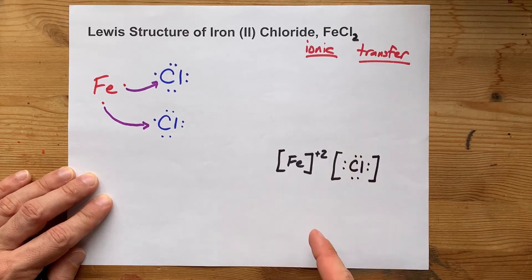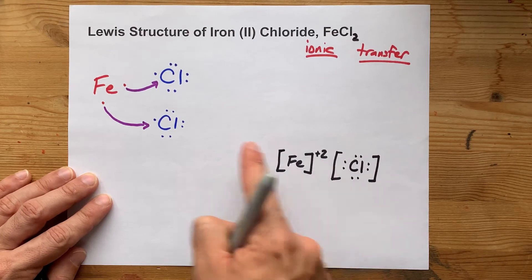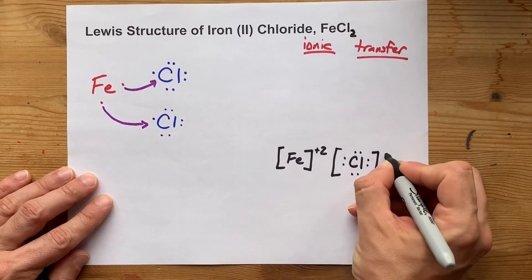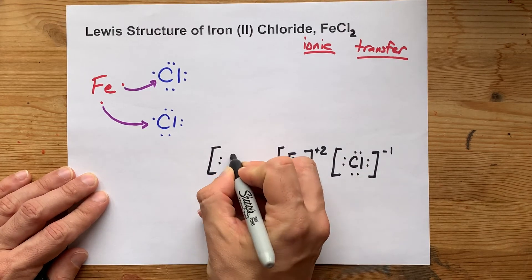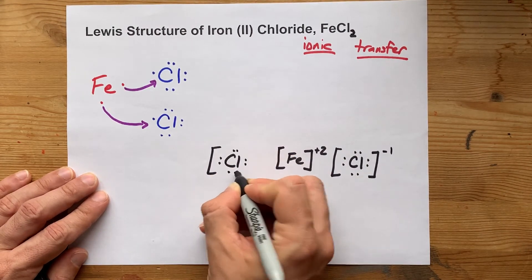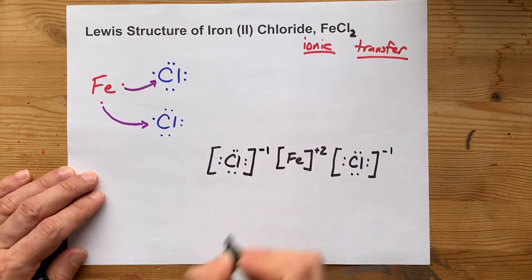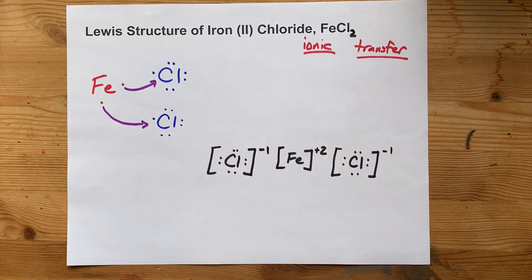Notice we have our seven original electrons plus the one extra from iron, and that gets a minus 1 charge. I like putting my other chlorine on the other side, showing some amount of symmetry here. And there is your completed Lewis structure.